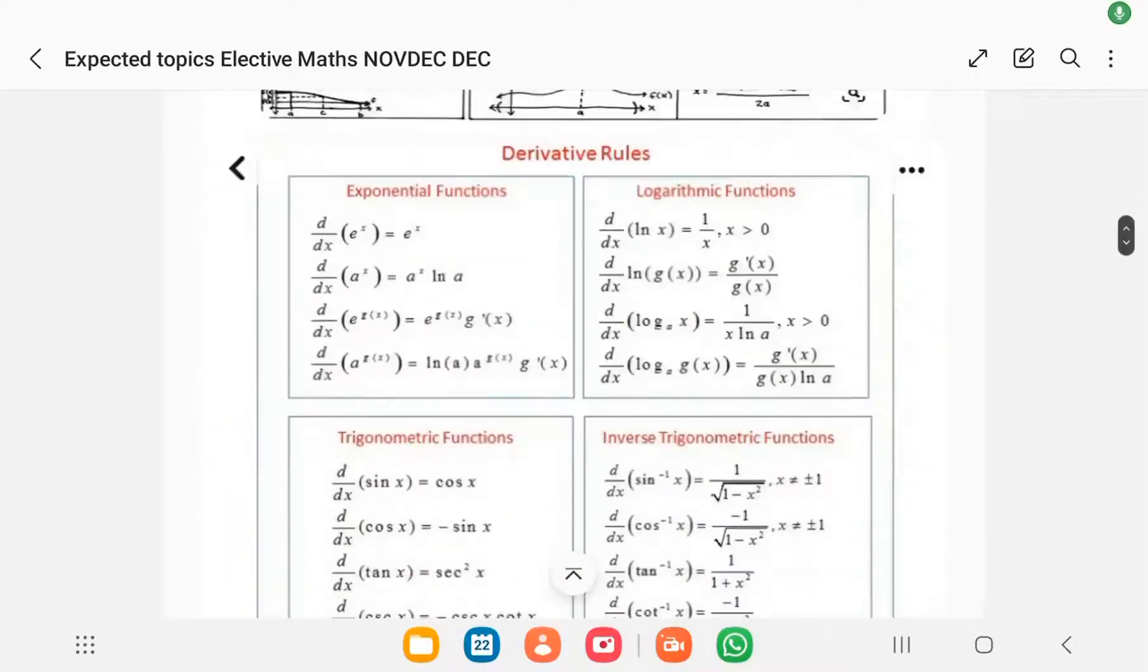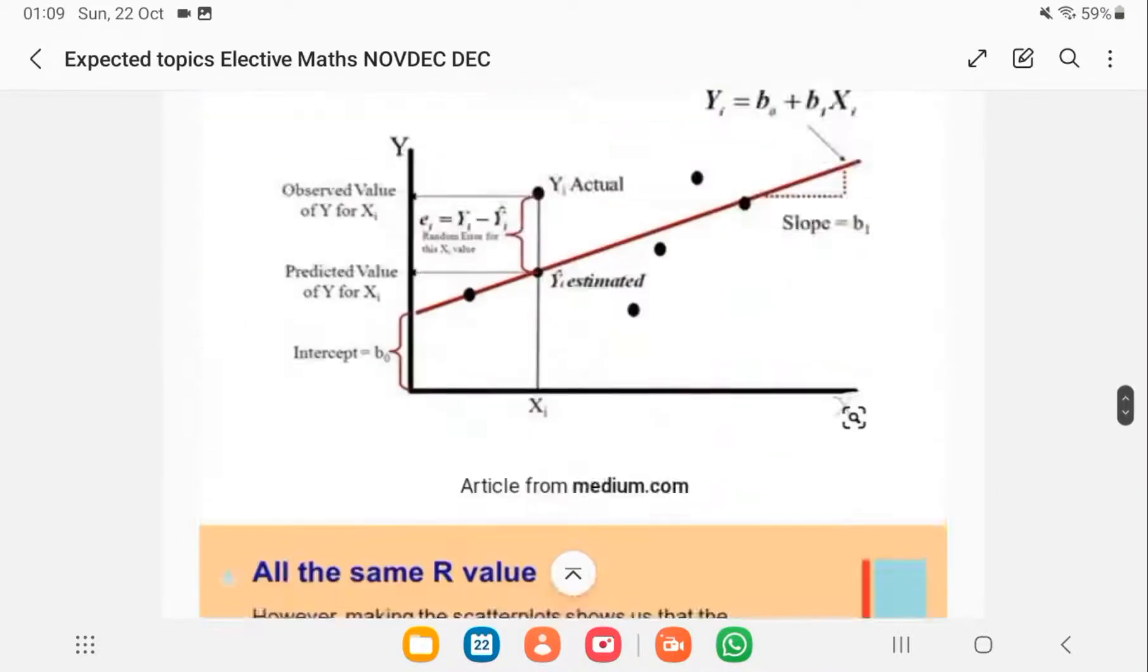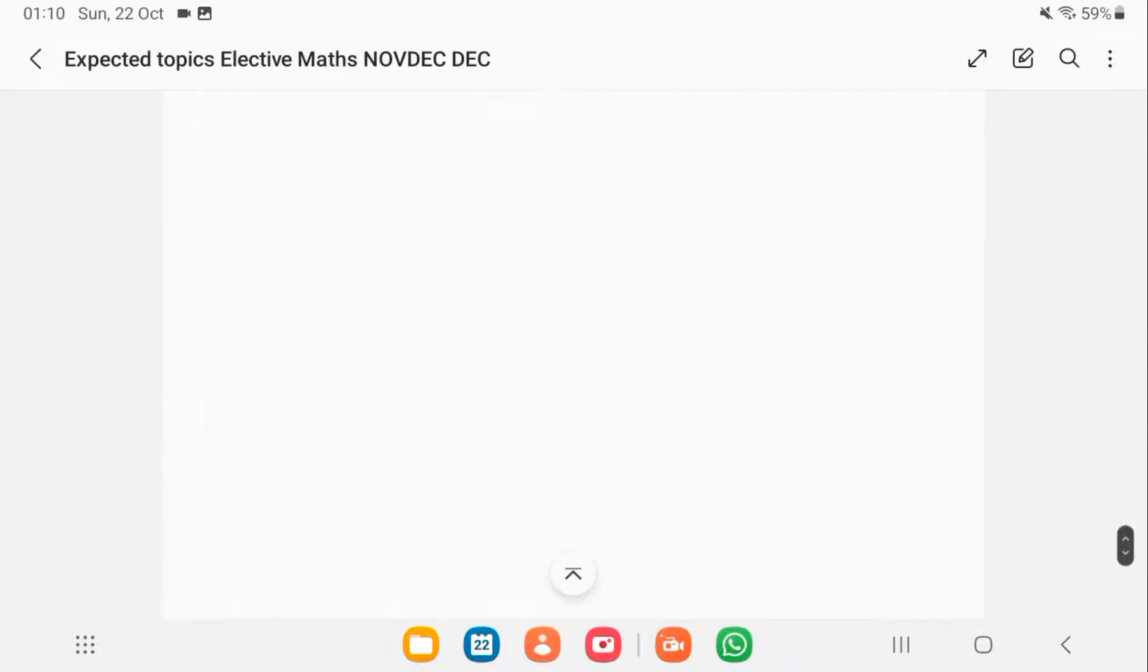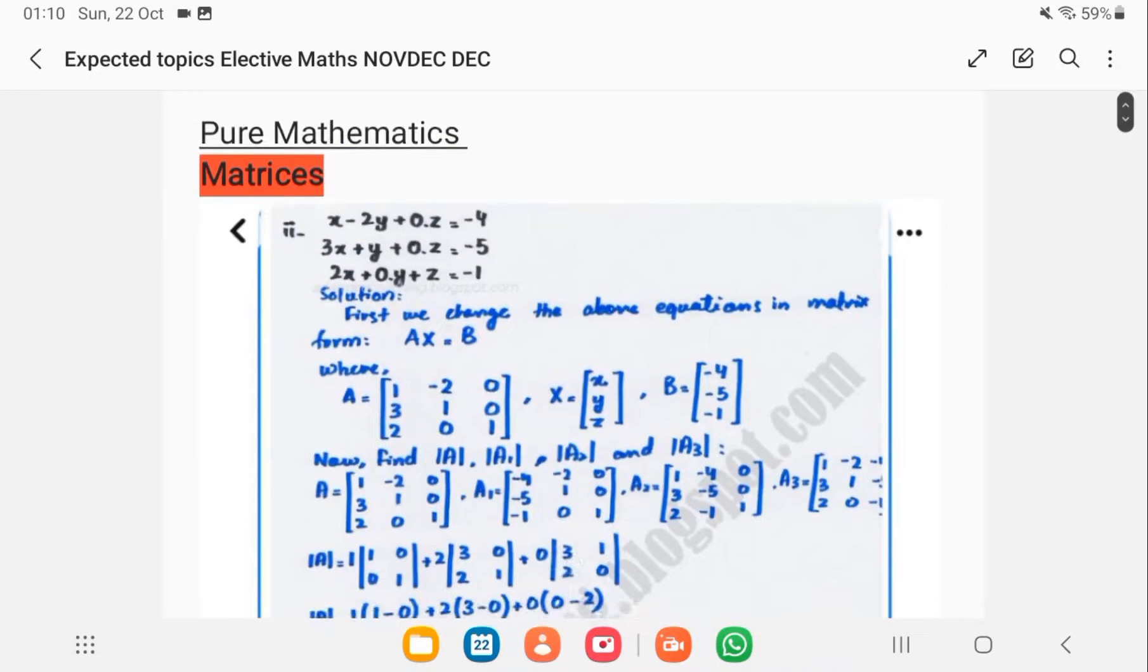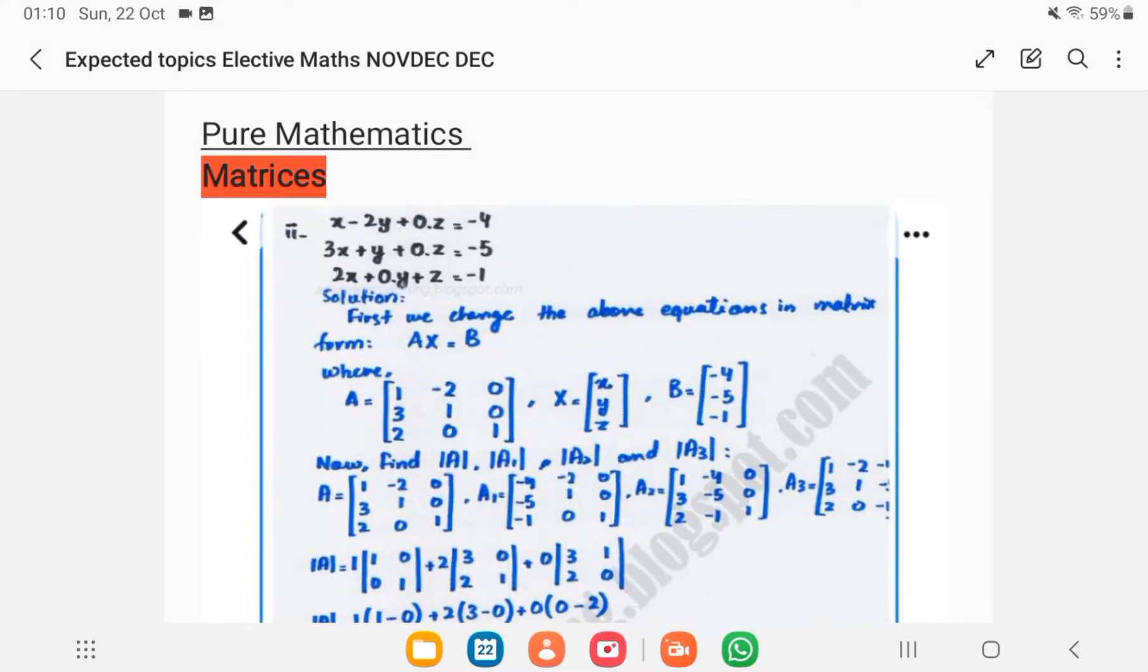Elective math is one of the easiest subjects to pass. I never got this information until I was done with my senior high school education, so you are fortunate to be watching this video now. Aside from the compulsory questions you have to answer, there are the optional questions. All you have to do is master certain topics and get your grade A.